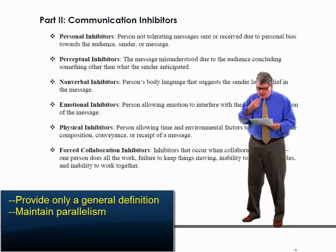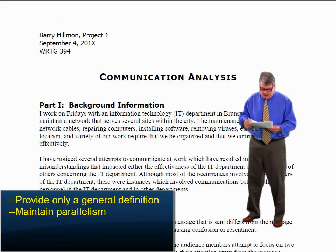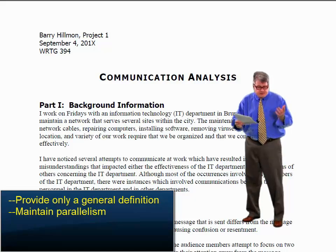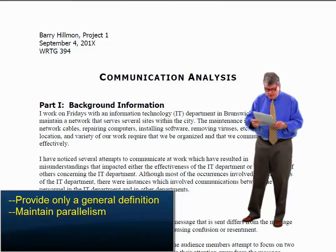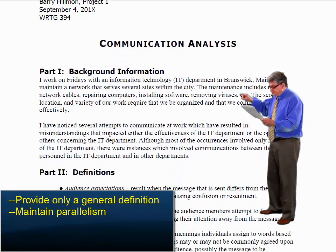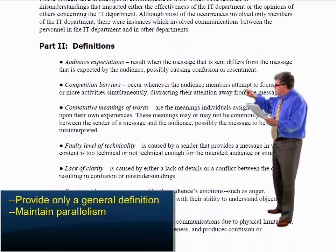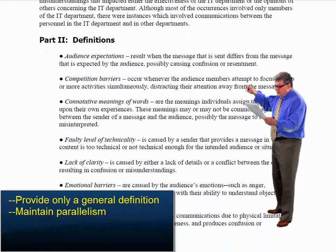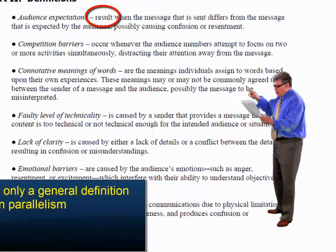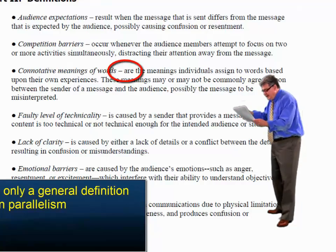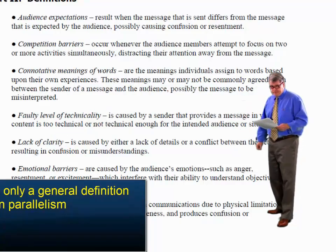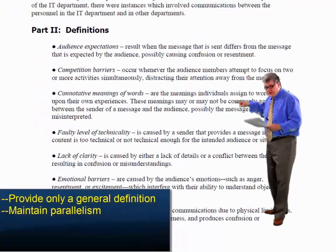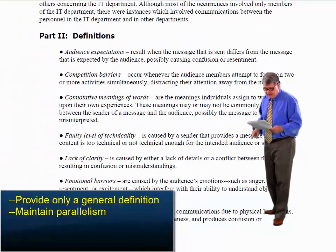Let's look at the one done by Barry Hillman — these are fictitious names, by the way. Look at his definitions. Notice that each one begins with a verb: result, occur, are, is, is. So you have to have parallelism among that list.